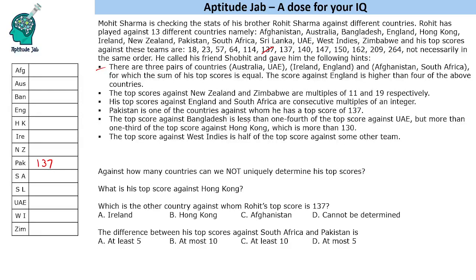The top score against Bangladesh is less than one-fourth of the top score against UAE, but more than one-third of the top score against Hong Kong, which is more than 130. This is a bit complicated but we can work with this statement. Because multiples of 11 won't be many, let us talk about the multiples of 11.